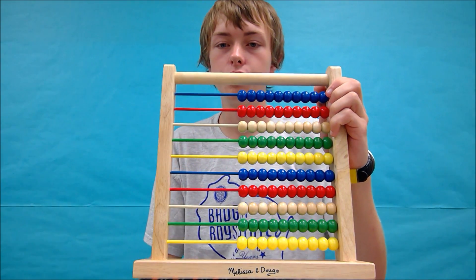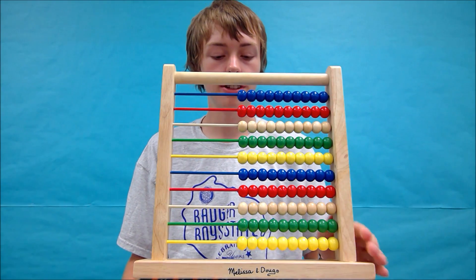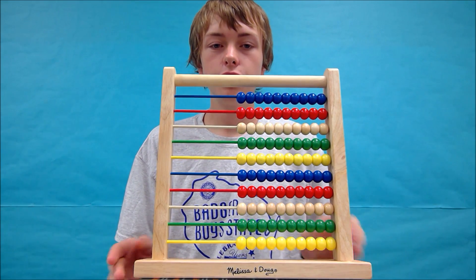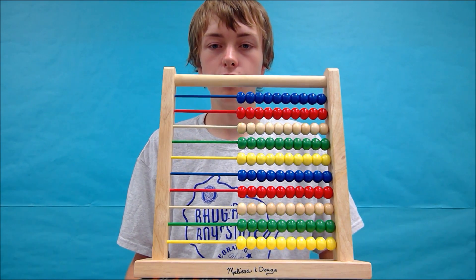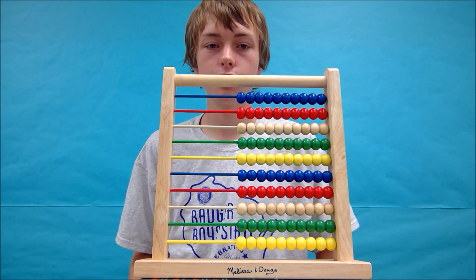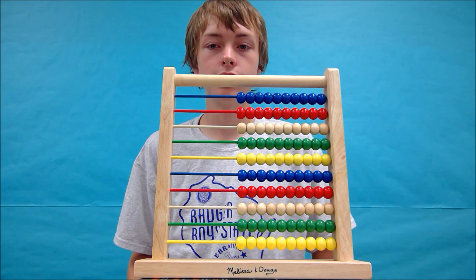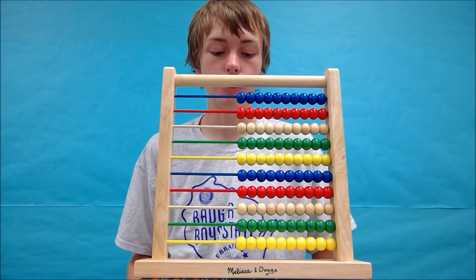Let's get started right away by adding two single digit numbers. Let's start with 3 plus 5. In any addition or subtraction problem that you solve with an abacus, you will start by forming the first number in the equation, which in this case is 3.